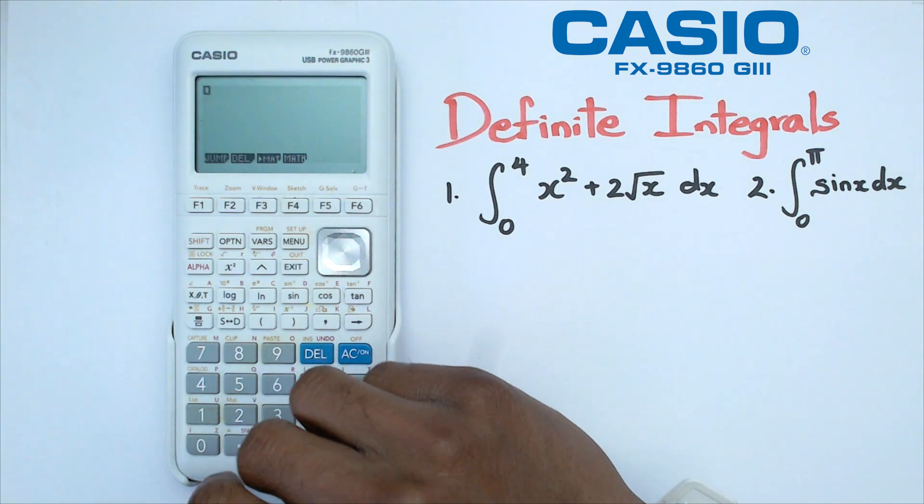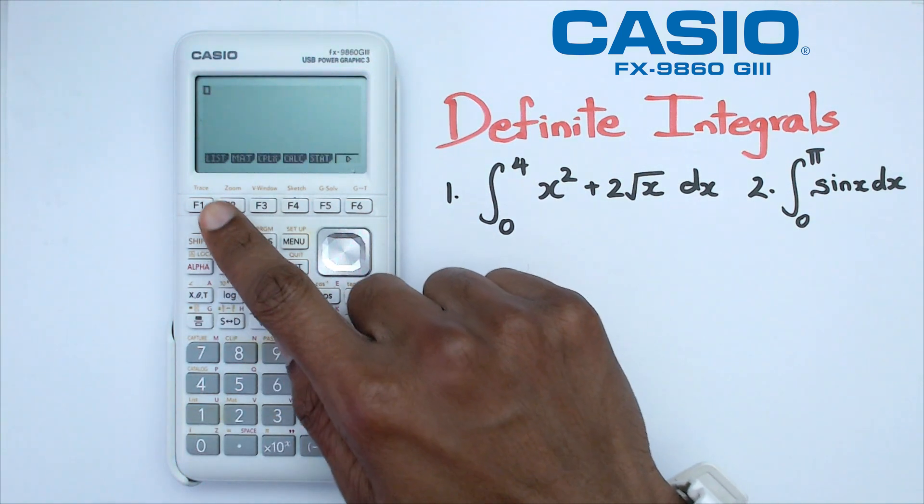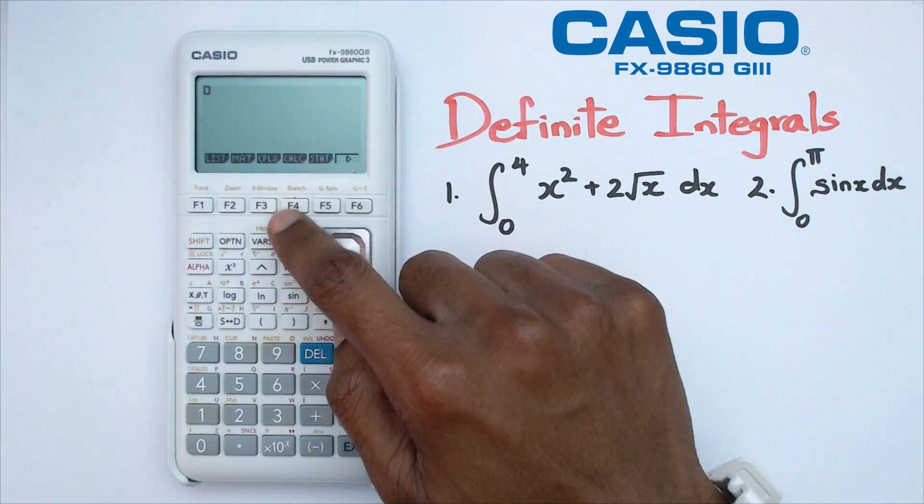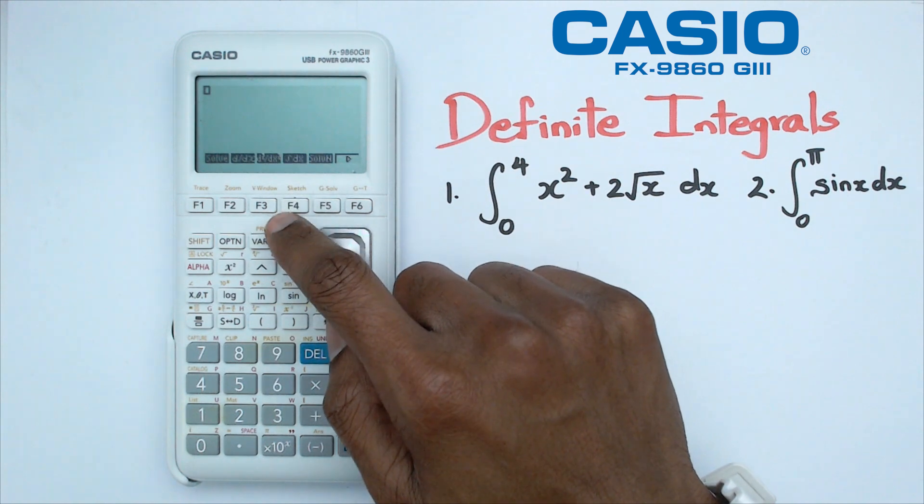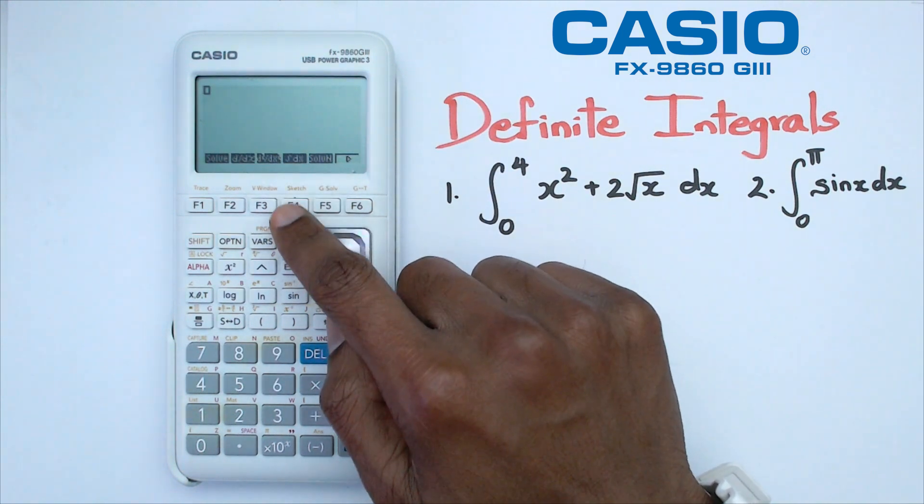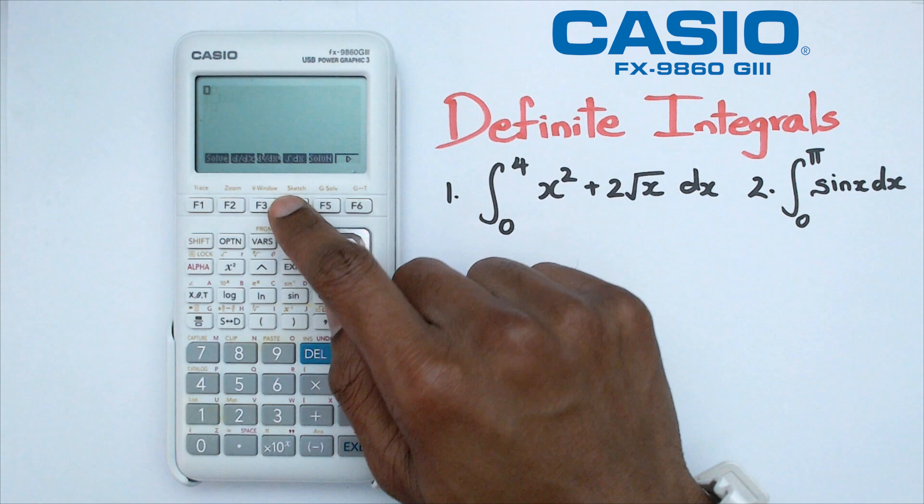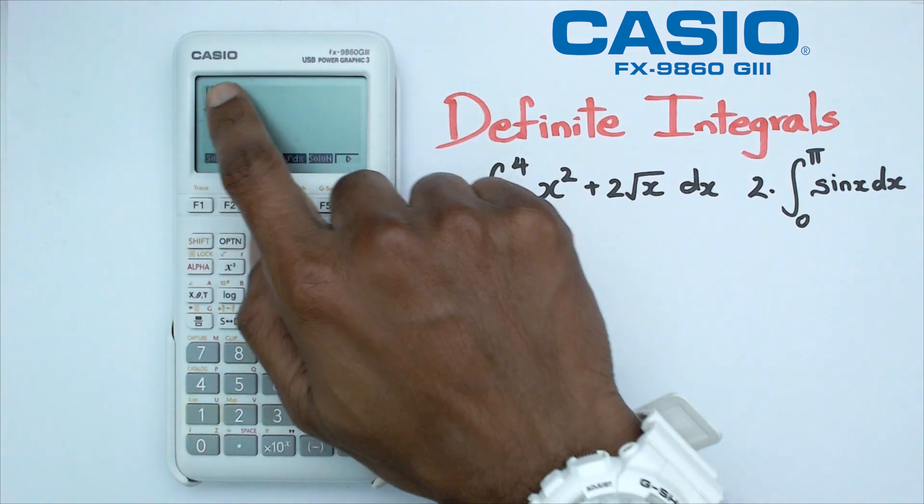From here, click on option and find the mode that says calc, which is F4. Click on F4, and you should see the integral sign, also under F4. Once we click on that, we're going to get three boxes.